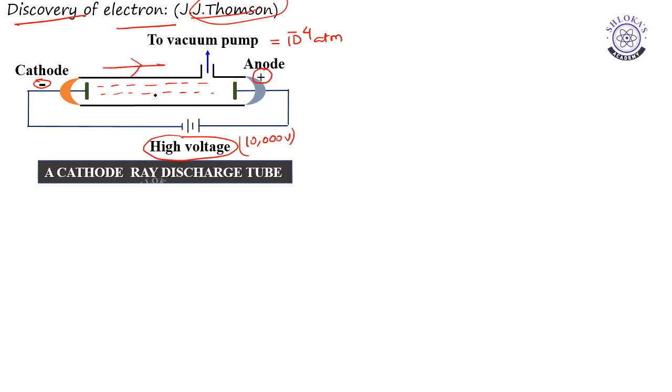As they are generating at the cathode, they were named as cathode rays. Now we have to discuss properties of cathode rays.